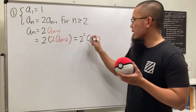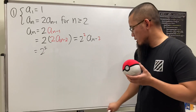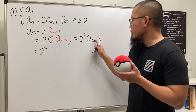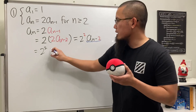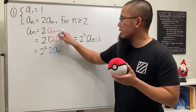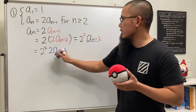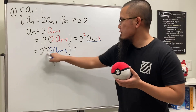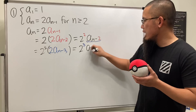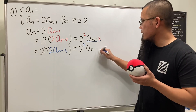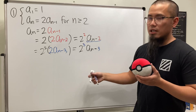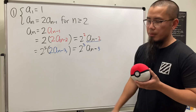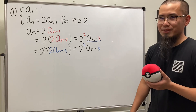We have 2² in front. Applying the rule one more time, put n minus two in, and we get 2·aₙ₋₂₋₁, which is aₙ₋₃. Multiplying through gives 2³ times aₙ₋₃. The next step would give 2⁴ times aₙ₋₄, and so on. So how many more times do we have to do this?